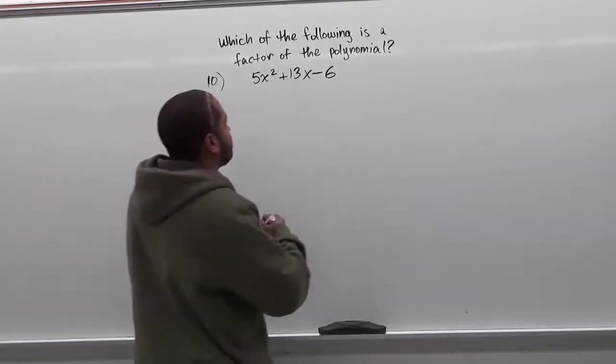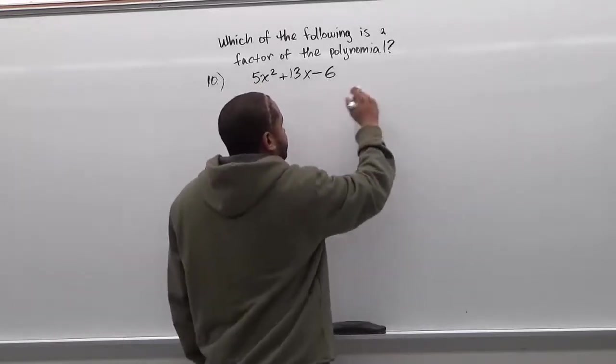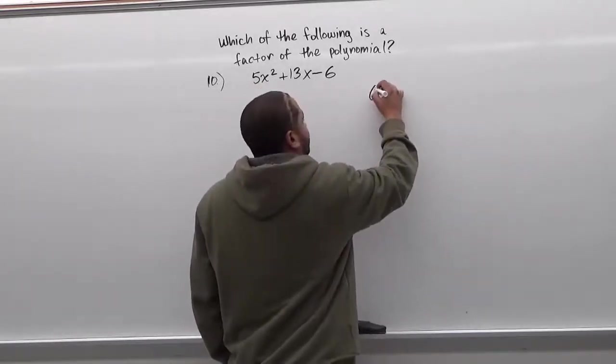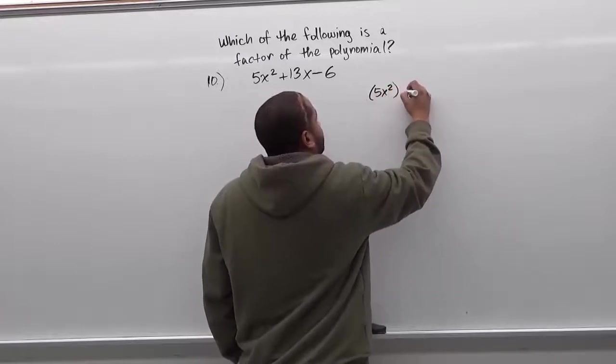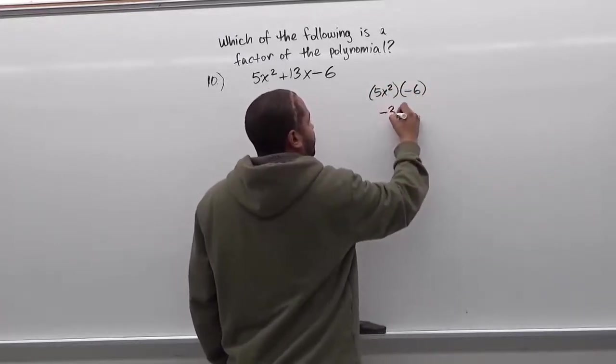So our first step here is going to be to take the A term and the C term and multiply them. So we have 5x squared and we also have negative 6 and we're going to multiply these two and they become negative 30x squared.